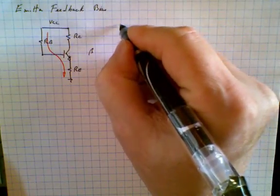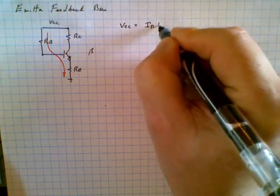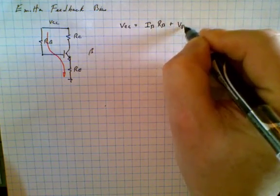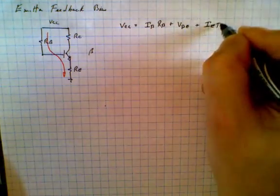So we can say that Vcc is equal to Ib Rb plus Vbe plus Ie Re.